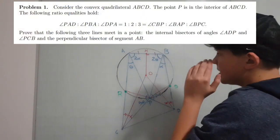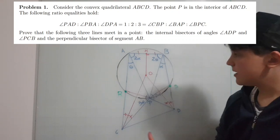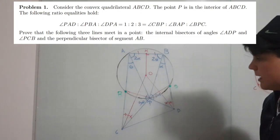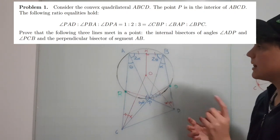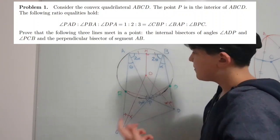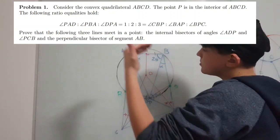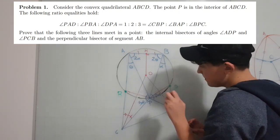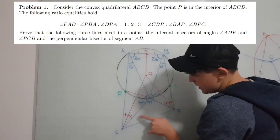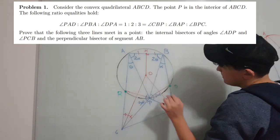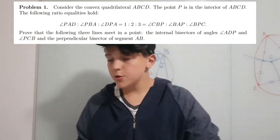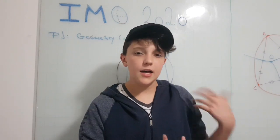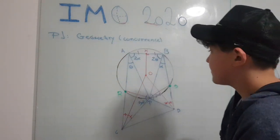The question says: let ABCD be a convex quadrilateral in the plane and let P be a point in its interior such that angle PAC measures theta, angle PBA measures 2-theta, angle PBA measures alpha, angle PAB measures 2-alpha, angle CPA measures 3-theta, and angle DPB measures 3-alpha. I'm very interested in IMO questions and I love this type of geometry problem, so let's go and solve it.